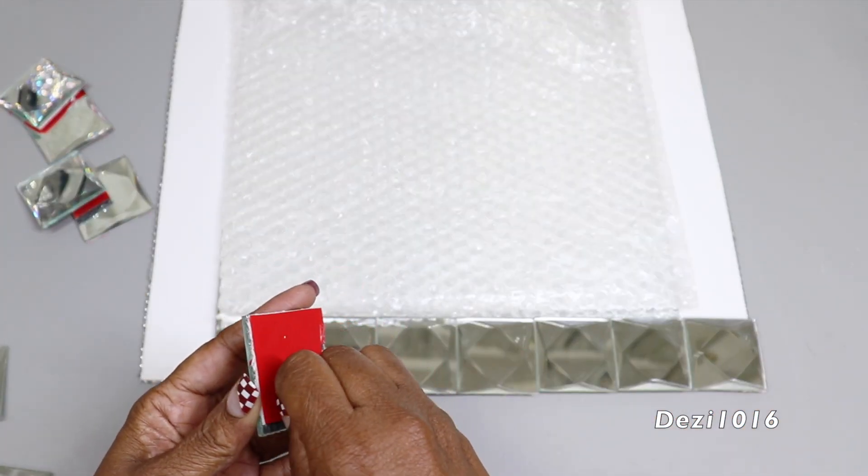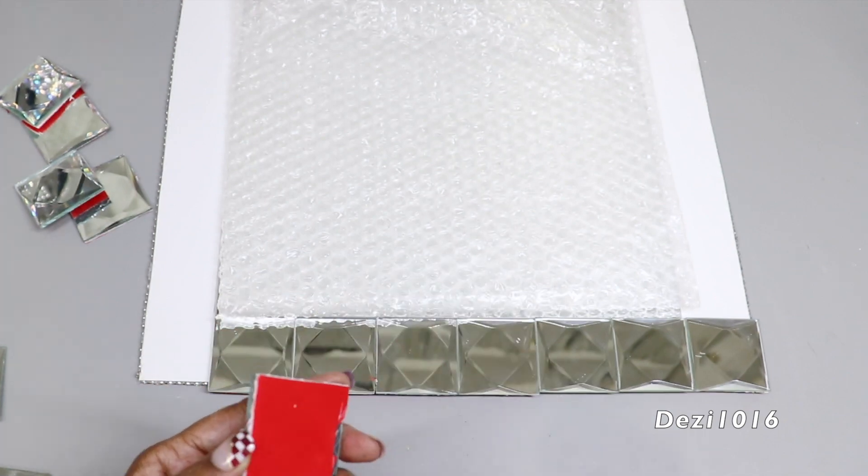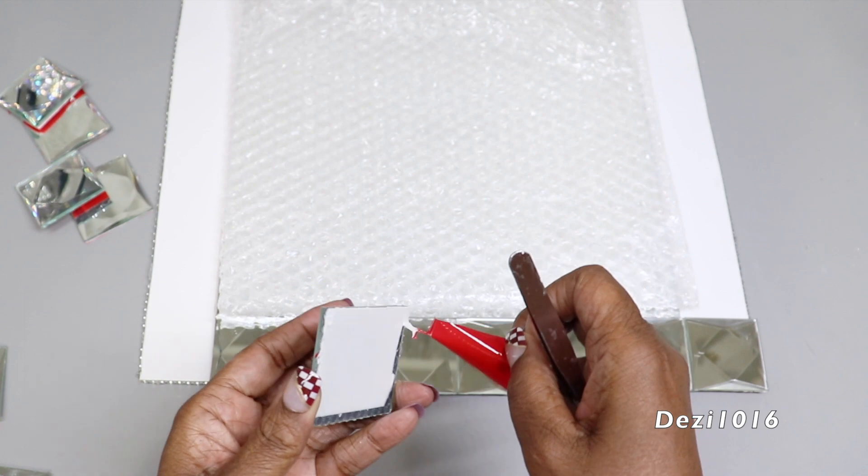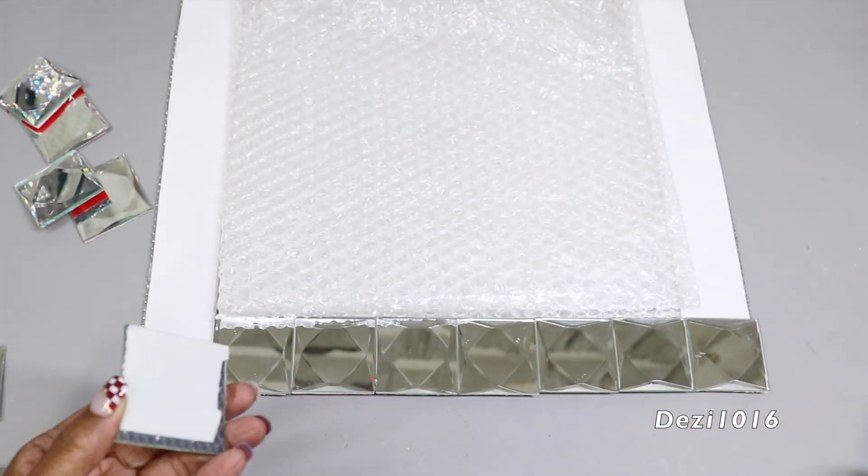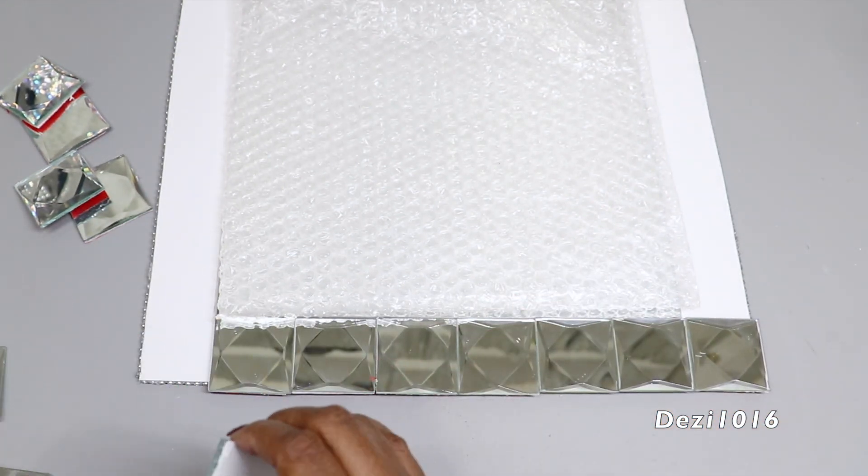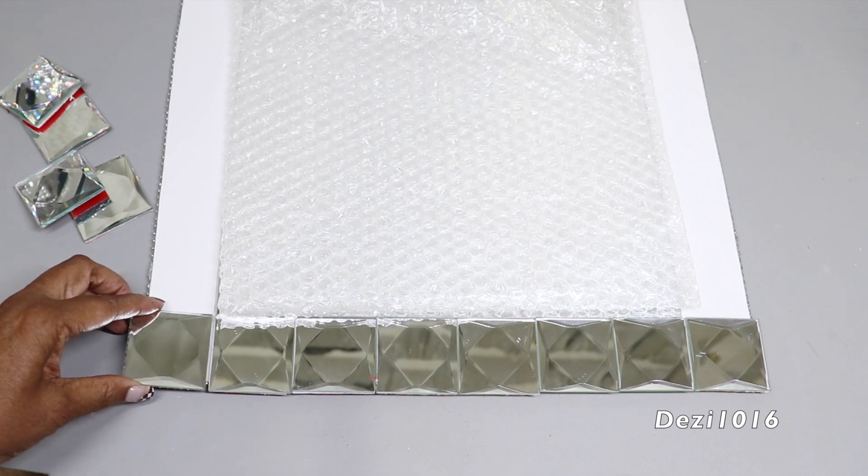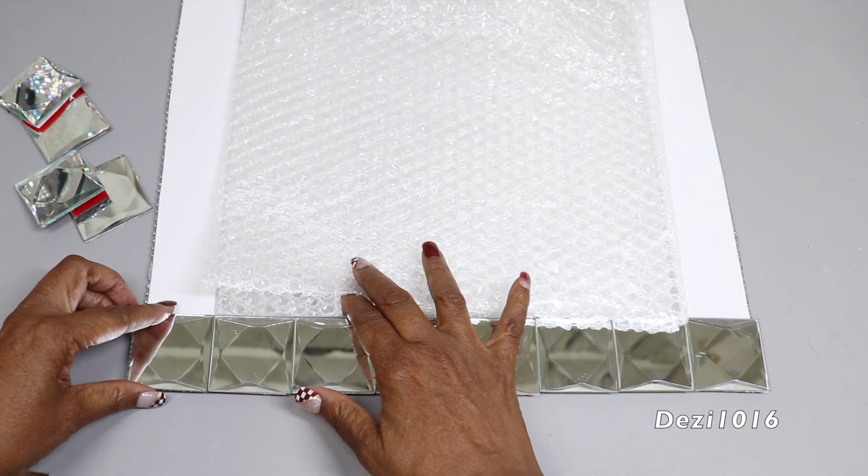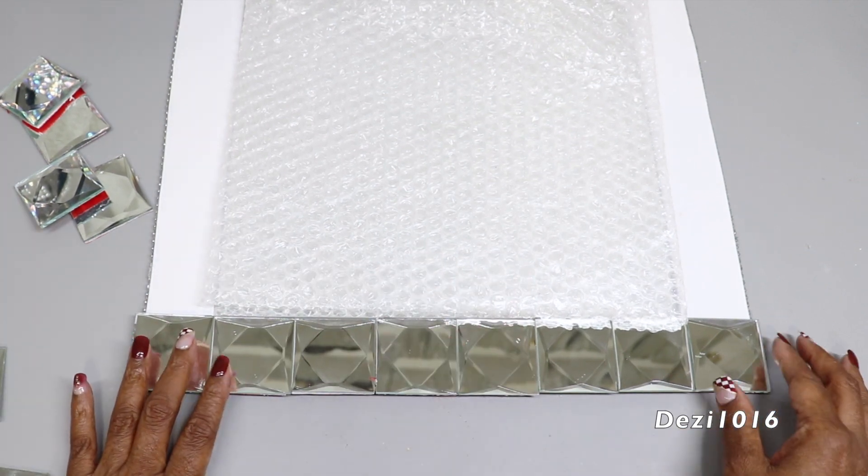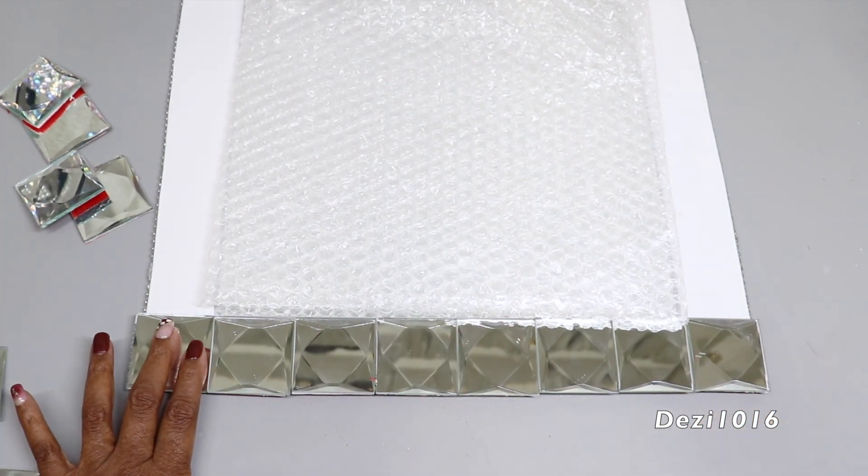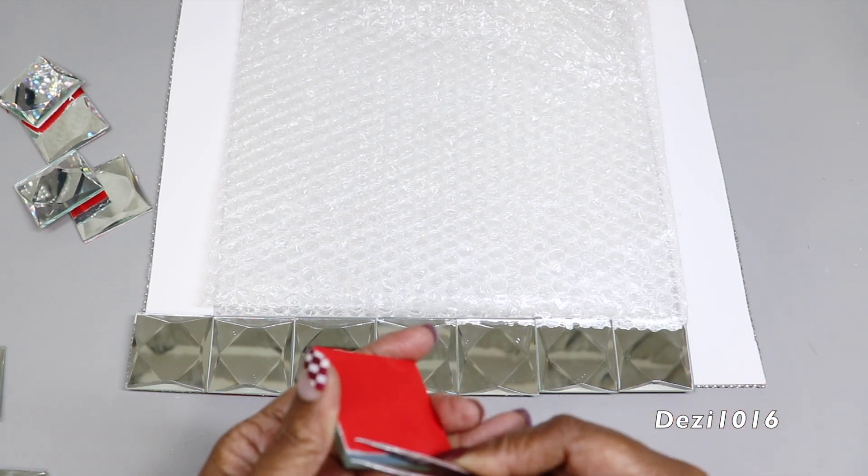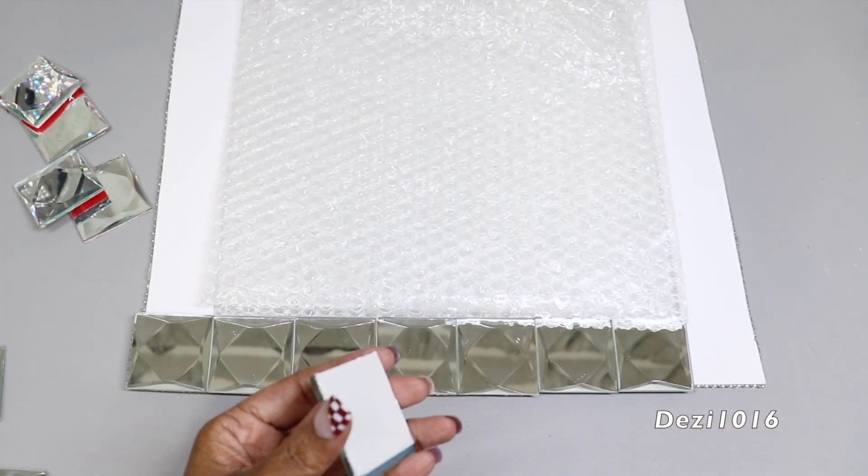Now I'm going to peel off the red backing, and guys this is extremely sticky. I'm going to carefully put it into place, making sure I line it up just right because it's very sticky. I'm going to press it down into place and then apply the other end and that corner, the other corner next. By doing this, all the other tiles that are going to be placed between these two will be nice and even.